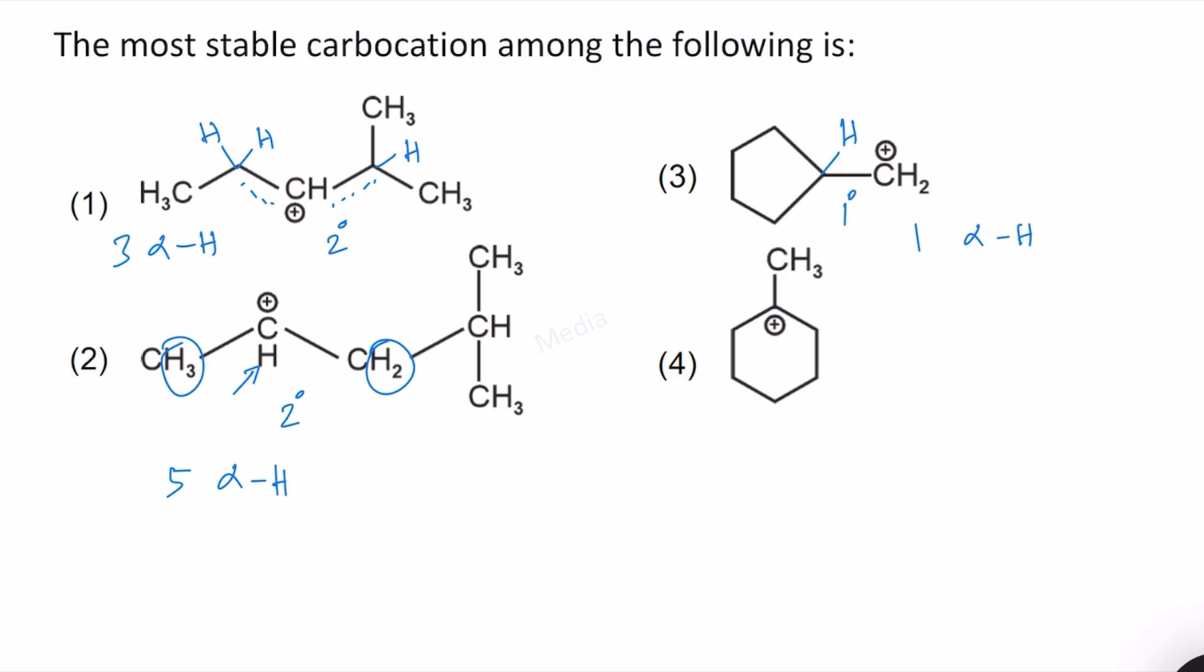In structure 4, we have in total how many? 3 plus 2, 5 and then here also 2. So total we have 7 alpha hydrogen atoms. This is a tertiary carbocation.